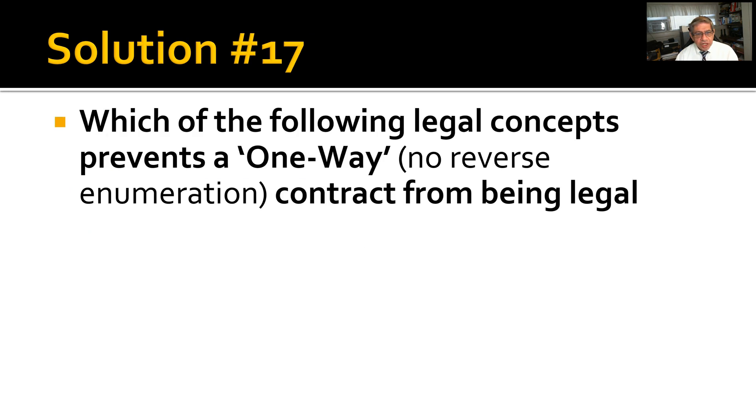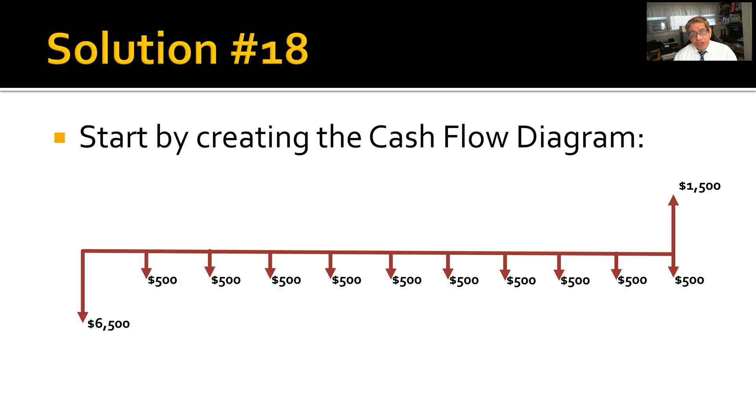Solution number 17: Which of the following legal concepts prevents one-way, no reverse enumeration contract from being legal? Of the choices given, it is quid pro quo. You can look that one up in the textbook as well. Although I'm not a lawyer, so please look it up or consult a lawyer for either this problem or the previous one where legalities are mentioned.